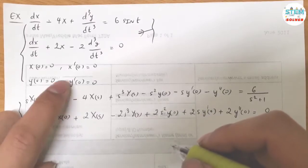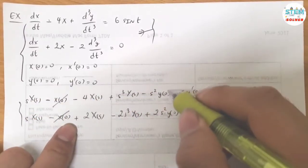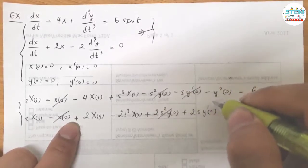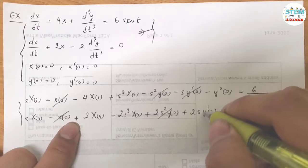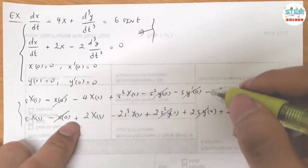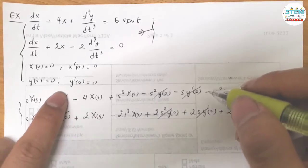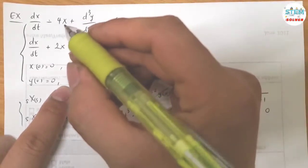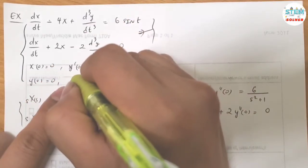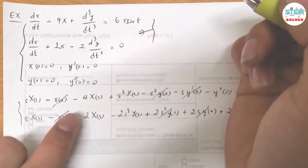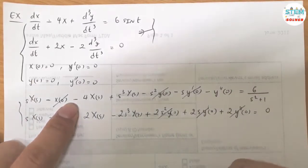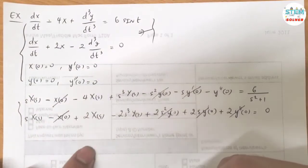Now look at the initial conditions — they are all zeros. X(0) equals 0, Y(0) equals 0, Y'(0) equals 0, and Y''(0) equals 0. Note that there is no X'(0) term. With all these zeros substituted in, the equations look much simpler.